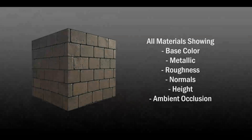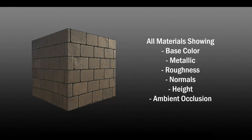The very first image you see here is our demo cube, and it shows off a full material setup that includes Base Color, Metallic, Roughness, Normals, Height, and Ambient Occlusion maps. So what I'm going to do is break down all the textures included in this material and explain their basic function.